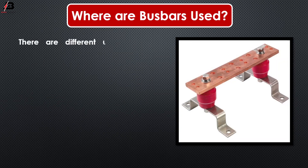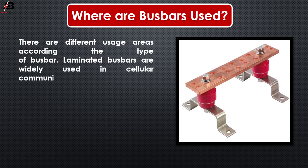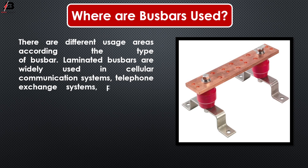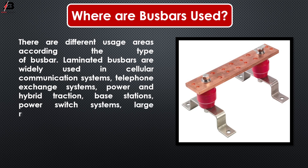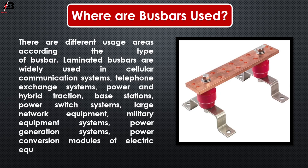There are different usage areas according to the type of busbar. Laminated busbars are widely used in sensor communication systems, telephone exchange systems, power and hybrid traction, base stations, power switch systems, large network equipment, military equipment systems, power generation systems, and power conversion modules of electric equipment.